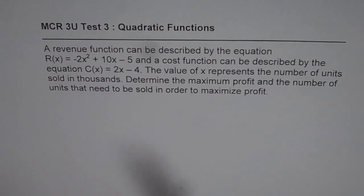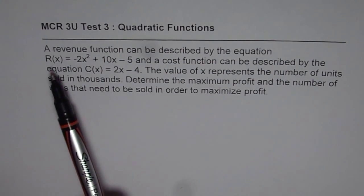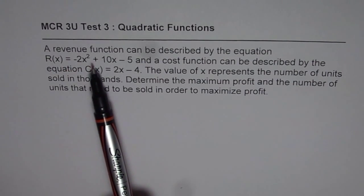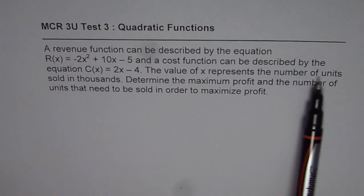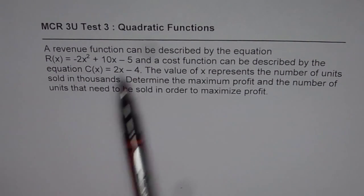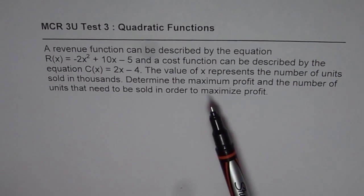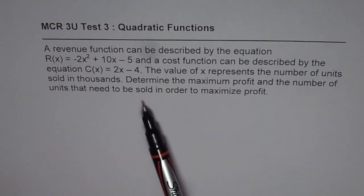The question is, a revenue function can be described by the equation R(x) equals minus 2x squared plus 10x minus 5 and a cost function can be described by the equation C(x) equals 2x minus 4. The value of x represents the number of units sold in thousands. Determine the maximum profit and the number of units that need to be sold in order to maximize the profit.